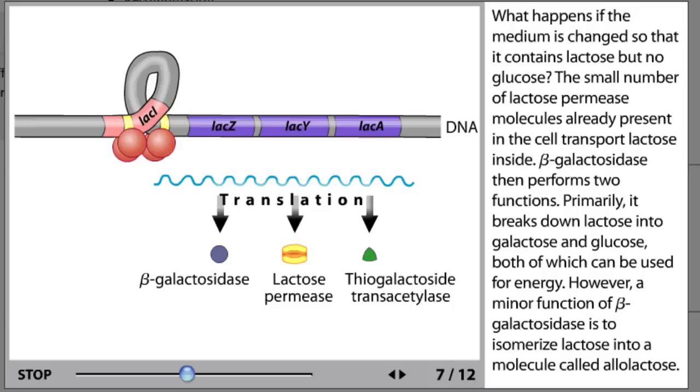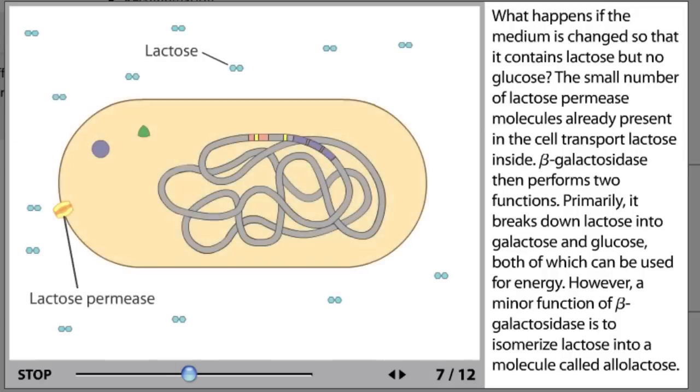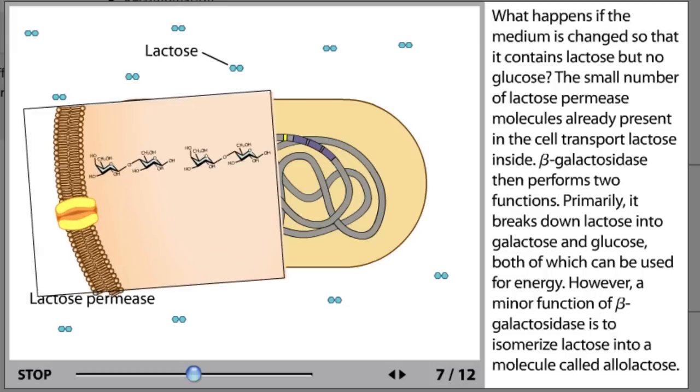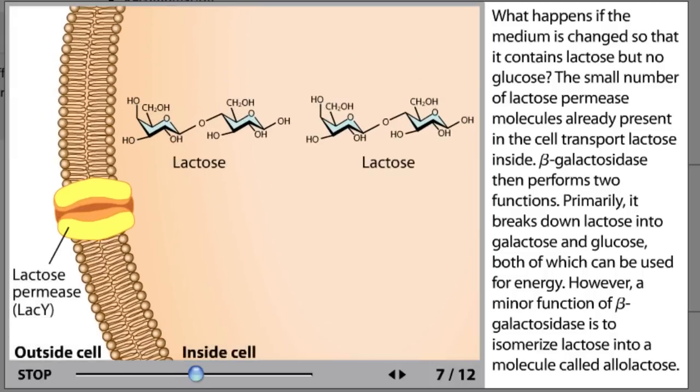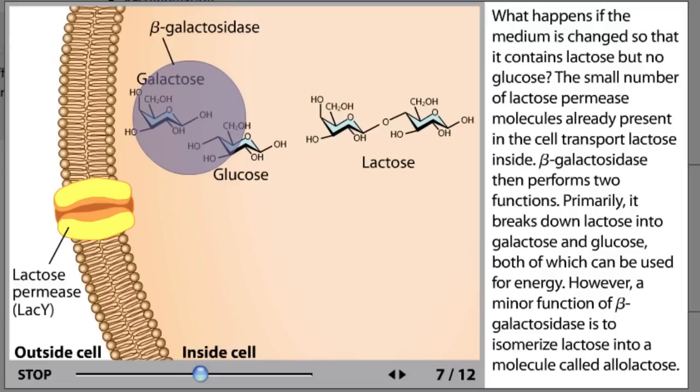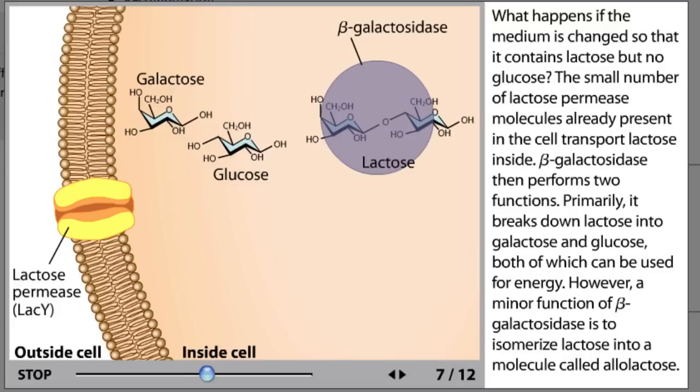What happens if the medium is changed so that it contains lactose but no glucose? The small number of lactose permease molecules already present in the cell transport lactose inside. Beta-galactosidase then performs two functions. Primarily, it breaks down lactose into galactose and glucose, both of which can be used for energy. However, a minor function of beta-galactosidase is to isomerize lactose into a molecule called allolactose.